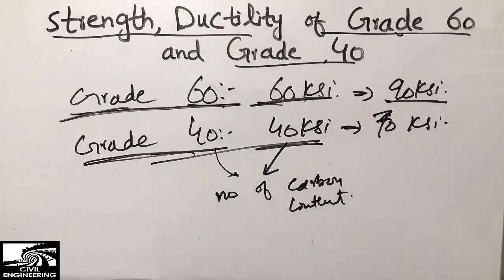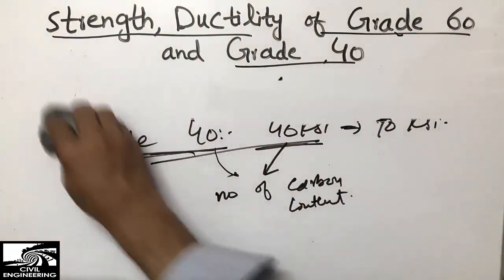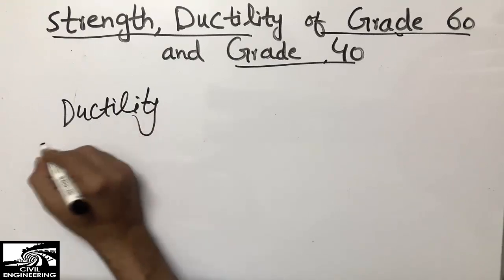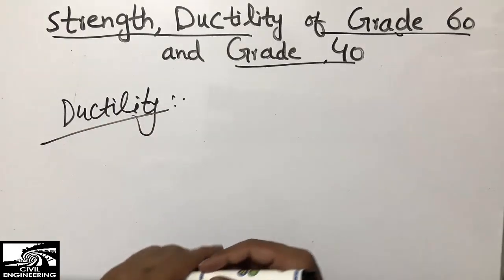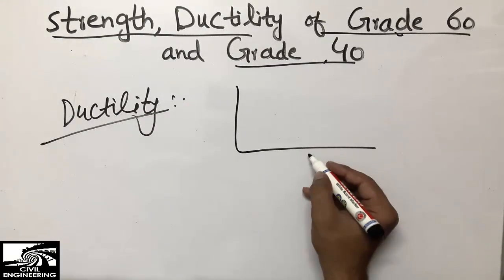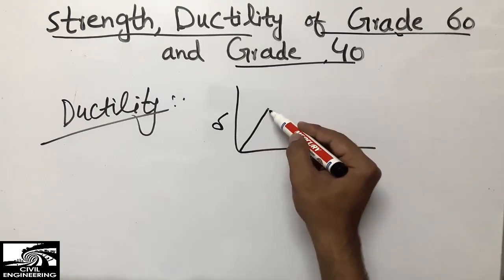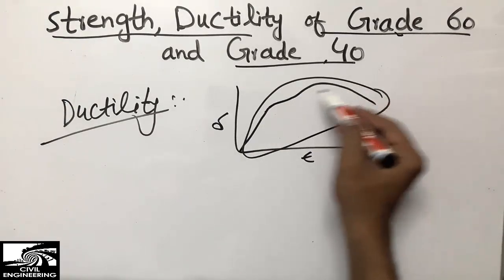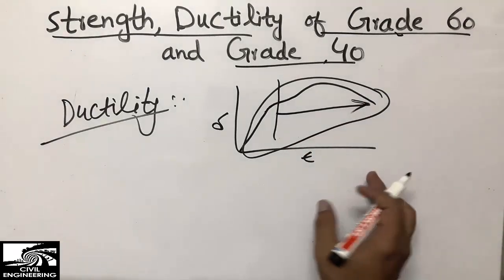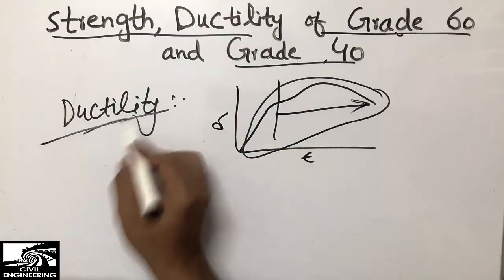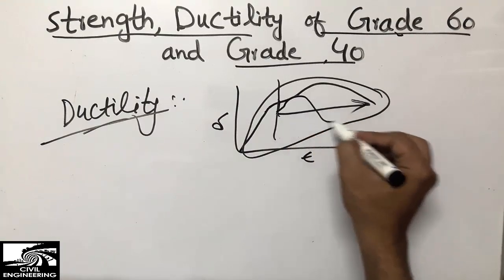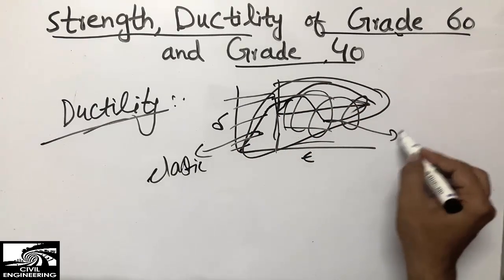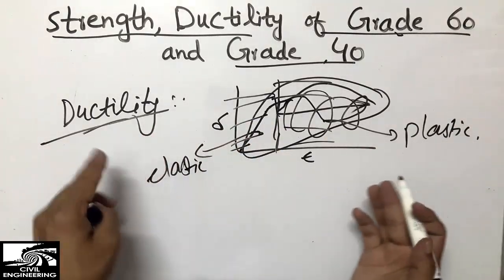Now let's compare ductility — which grade is more ductile. Ductility is another very important property of steel. I'm showing it by a graph: this axis is strain and this axis is stress. If a steel bar is pulled and it reaches yield, then goes to ultimate strength before coming back down, it is a more ductile material because it undergoes more plastic deformation. This region is the plastic deformation stage, while the earlier region is the elastic deformation stage.